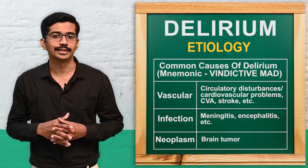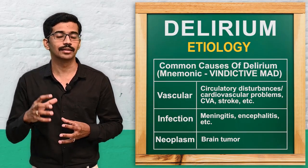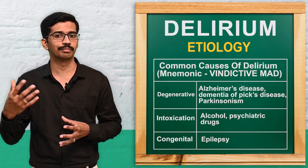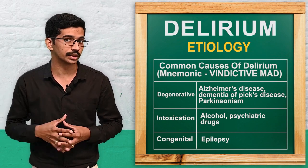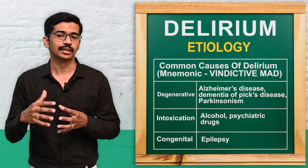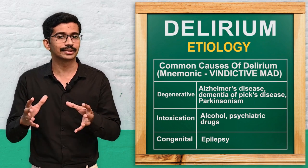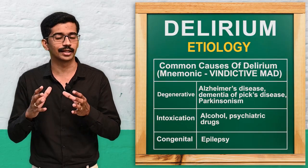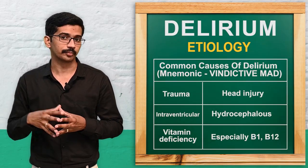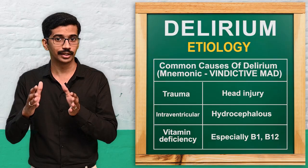N stands for neoplasm — brain tumors. DC stands for degenerative causes of the brain, especially Alzheimer's dementia or dementia of Pick's disease. The next I stands for intoxication — chronic alcoholic patients or intoxication from certain psychiatric drugs. C stands for congenital — from birth the child may have certain diseases; one best example is epilepsy, and delirium is very common in such patients. T stands for trauma, especially head trauma or head injury. Then intraventricular causes — hydrocephalus is the best example.